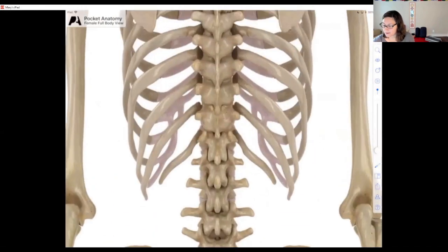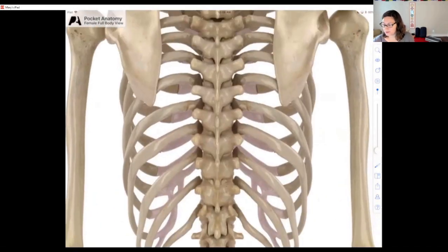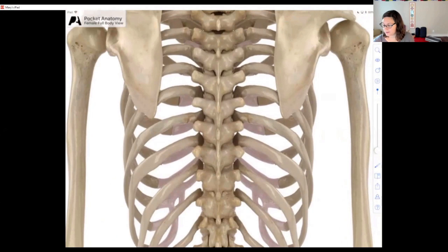Now, if we move up the column to the thoracic, I'm going to highlight the thoracic facet joints. So now in the lumbar, in the lumbar, the facet joints are oriented 90 degrees vertically in the sagittal plane.